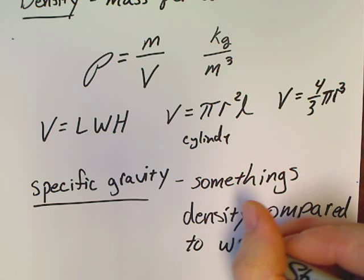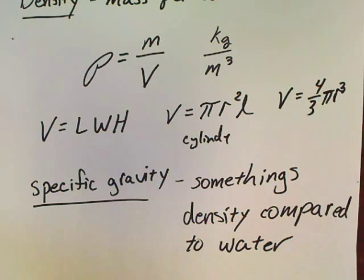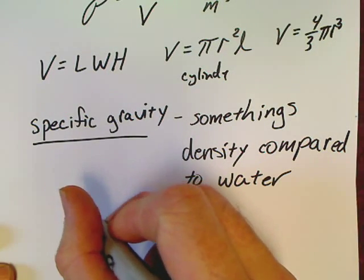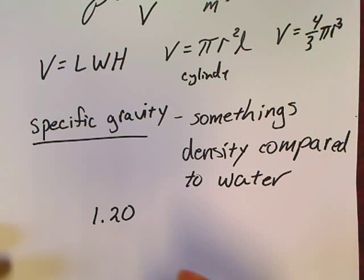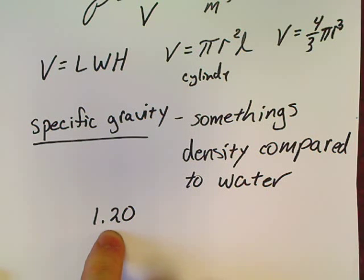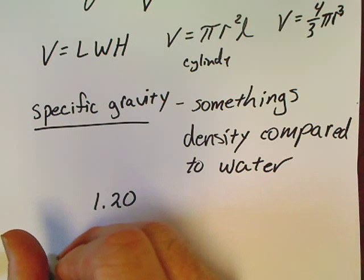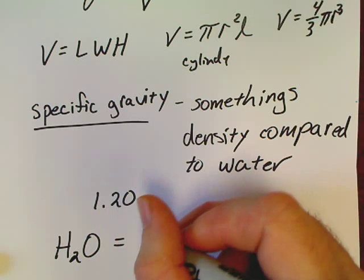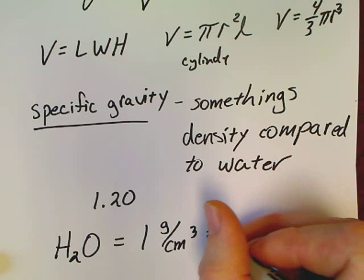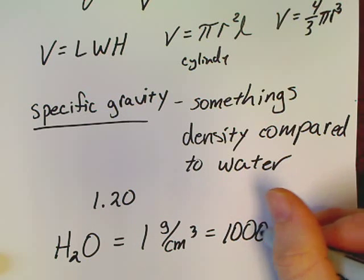A very simple definition on that. So you might read something and it says specific gravity is 1.20. Well, if something's specific gravity is 1.20, it means its density is 1.2 times that of water, because water H₂O has a density of one gram per centimeter cubed, or one thousand if you're in kilograms per meter cubed.